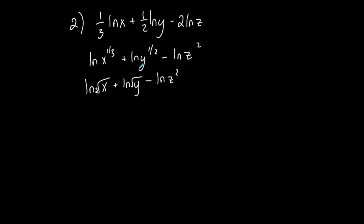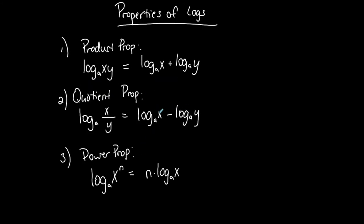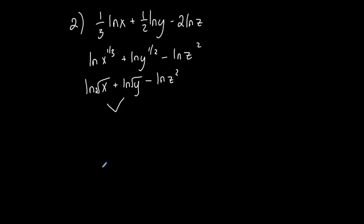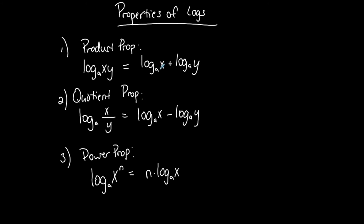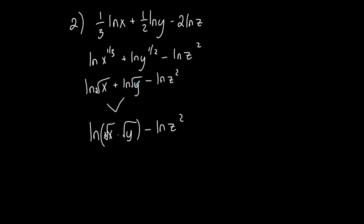I'm not done condensing — I want a single log and I have three logs written here. Don't confuse the index of the radical with the base; it's a natural log so the base is e. Since these properties only work two at a time, I'll start with the first two. A sum of separate logs condenses into a single log of a product: ln of the cube root of x times the square root of y, then bring down the minus ln of z squared.